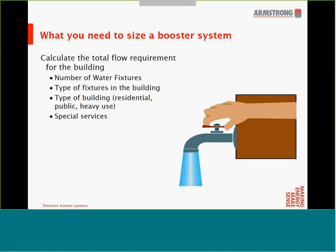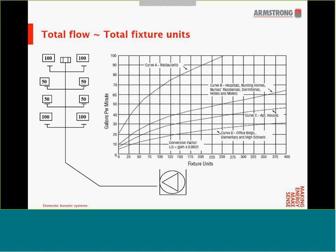Then we need to know what each fixture is — is it a toilet, a faucet, a valve, etc. We need to determine what type of building we're designing for: is it a residential building, public building, heavy-use building, or restaurants, for example. And lastly, we need to determine if there are any special services. One might be inclined to add up the required flow for each individual fixture and total them up, but this would lead to oversizing. Research shows it's possible to determine flow requirements from knowing the number of fixture units and the type of building.